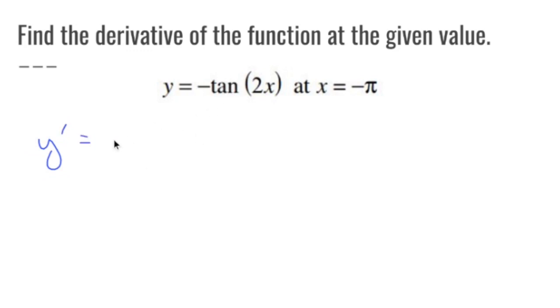The chain rule is you take the derivative of the outside stuff. So the derivative of negative tan of stuff is negative secant squared of stuff. Keep that stuff but then multiply everything by the derivative of the inside stuff.